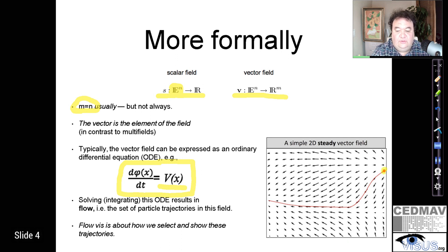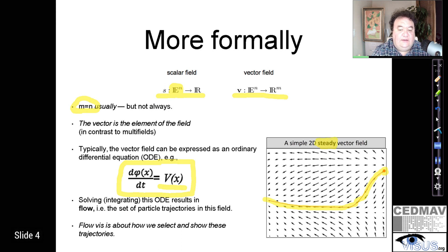For example, if you look at the red dot on the top right of this representation and start integrating over time — effectively solving the differential equation — we would follow the flow of the field along a red line. Many of those paths together give the overall flow in this particular steady vector field. We'll see later that those fields can be steady or unsteady. Steady ones are typically unrealistic but much easier to handle, while unsteady ones are what people deal with in practical applications, requiring much more sophistication.